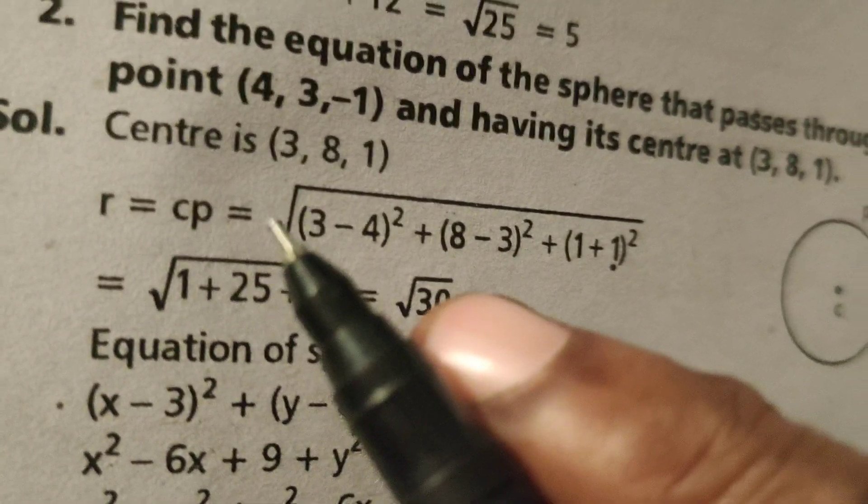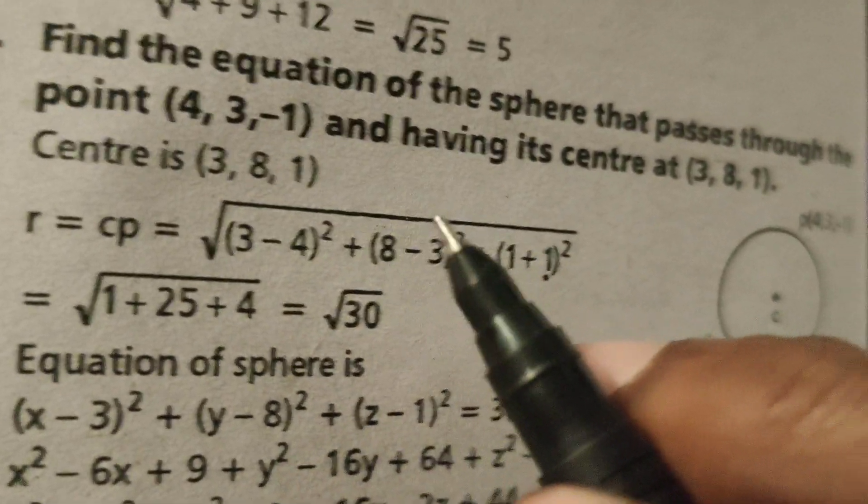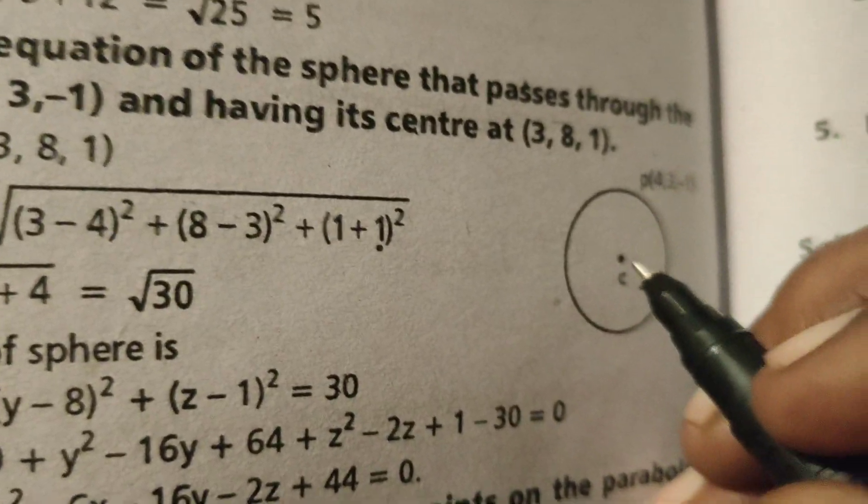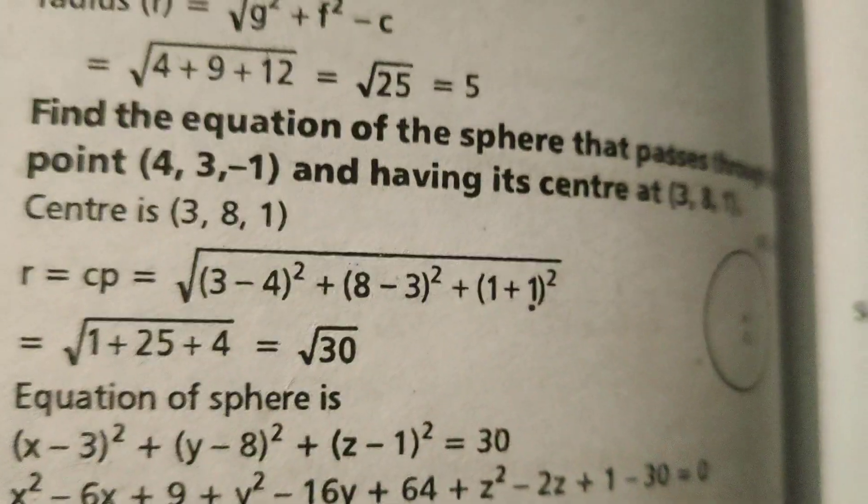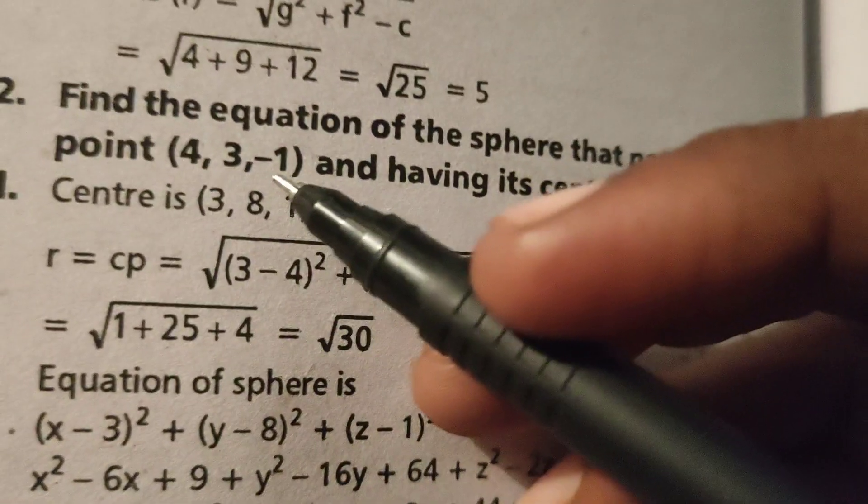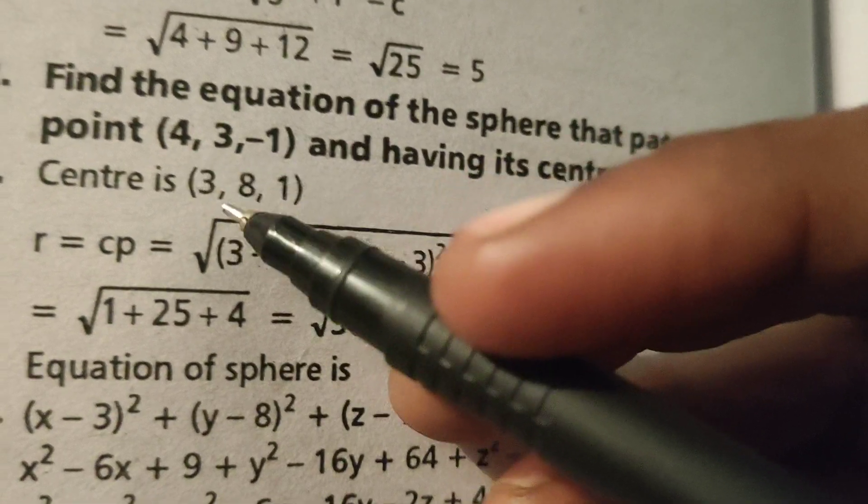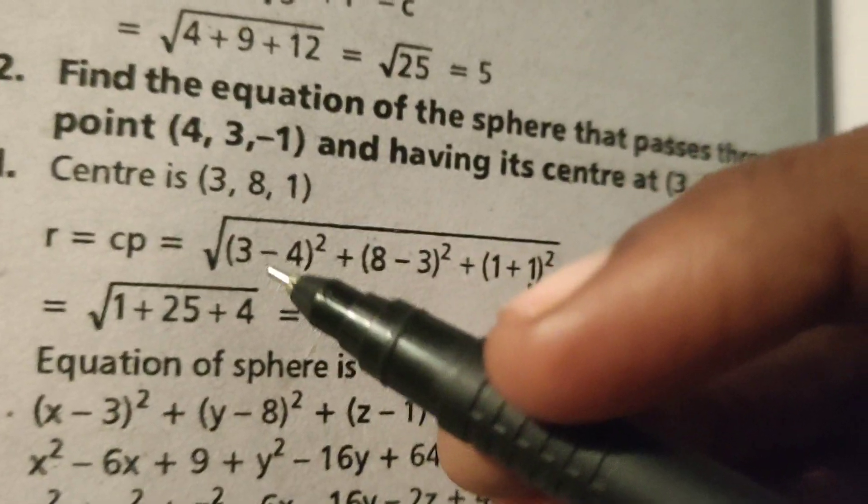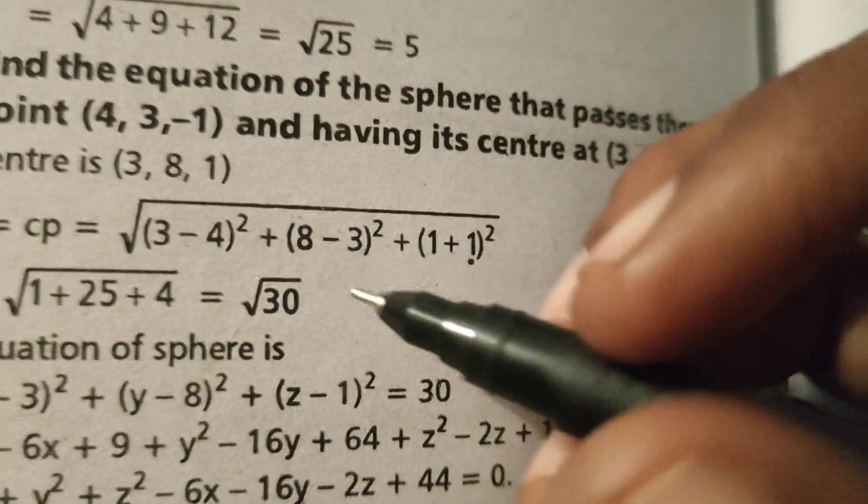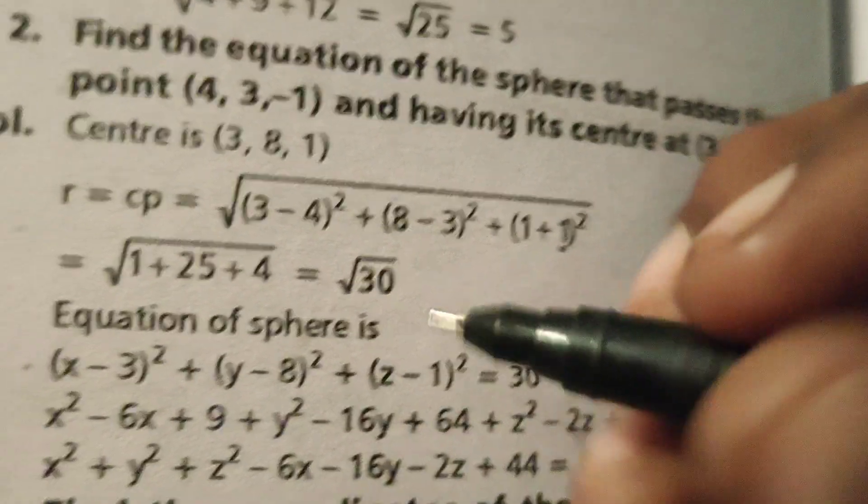Now, r equals the distance between center and the point, that is the radius. Find out the distance between point C and P using the distance formula: (x₁ - x₂)² which is (3 - 4)² plus (8 - 3)² plus (1 - (-1))², so (1 + 1)².